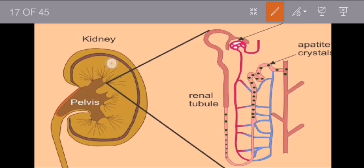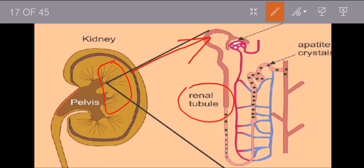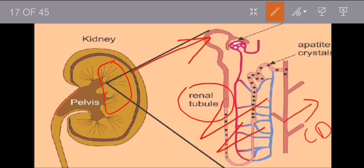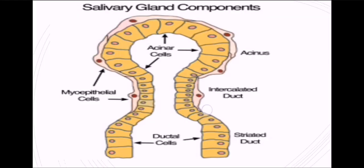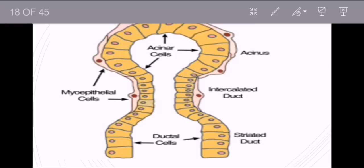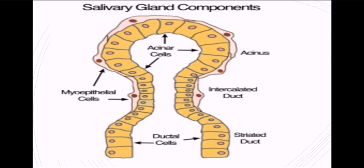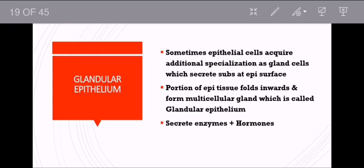In the kidney, when you see a microscopic structure there is a renal tubule, a collecting duct, and proximal and distal convoluted tubules. There is also a salivary gland component with various ducts such as intercalated ducts and striated ducts, from which saliva is secreted. Sometimes mucus will also secrete from them. Now we are discussing glandular epithelium.